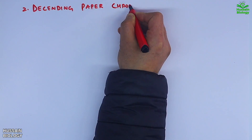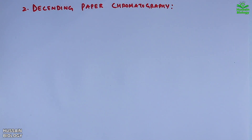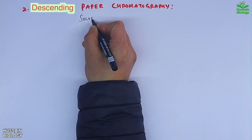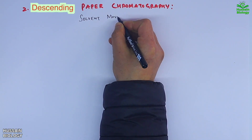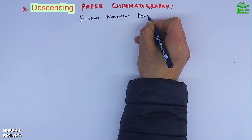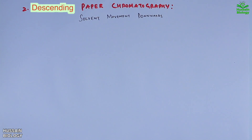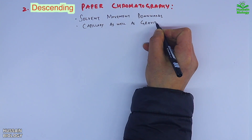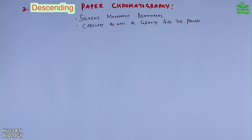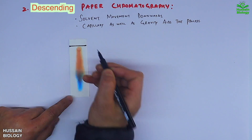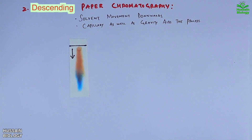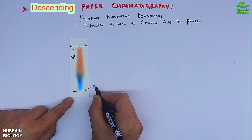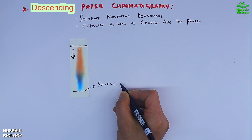Then we move on to descending paper chromatography, where solvent movement is downwards. Here both capillary action as well as gravity drive the process. The mobile phase moves downwards and the solvent front is at the bottom.